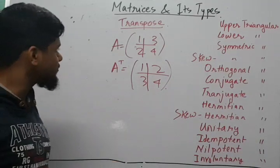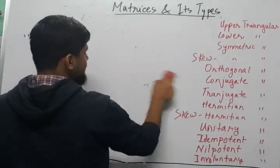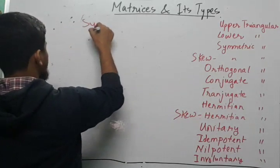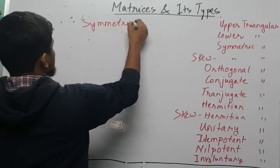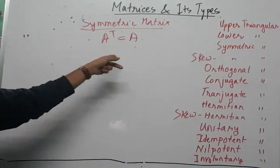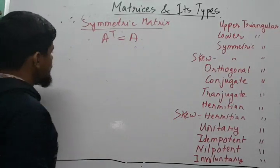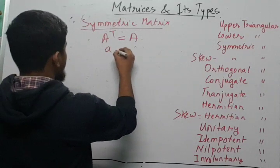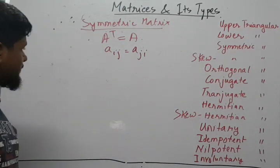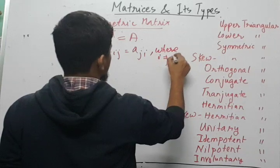Now, in symmetric matrices, if the matrix A transpose is equal to the matrix A itself, the matrix is symmetric. In short, we write that aᵢⱼ is equal to aⱼᵢ, where i is not equal to j. This is the defining condition for a symmetric matrix.